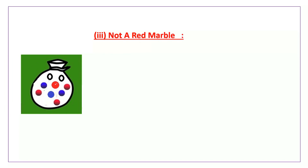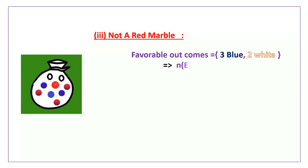Now for not a red marble from the bag: the favorable outcomes are the 3 blue marbles and 2 white marbles. So n of e is equal to 5. p of e is equal to n of e by n of s, which implies the probability of an event is equal to 5 by 9. So the probability of not taking a red marble from the bag is equal to 5 by 9.